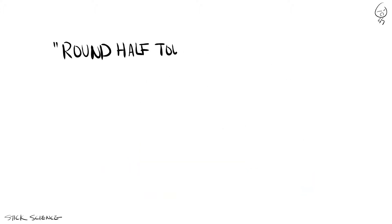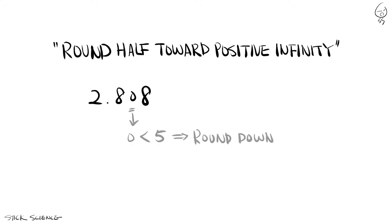Let's say we use round half towards positive infinity. Since the hundredth place in 2.808 is a zero, we round down to get 2.8 as the result of our calculation.